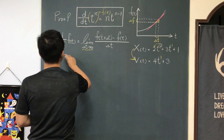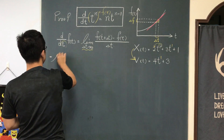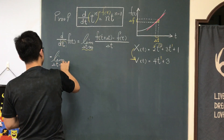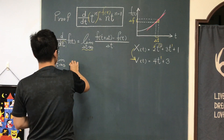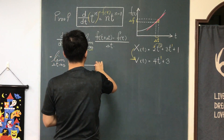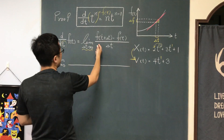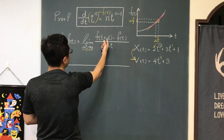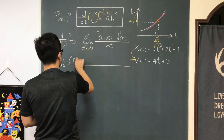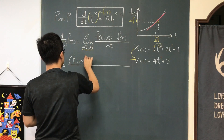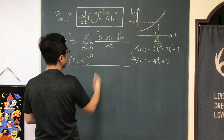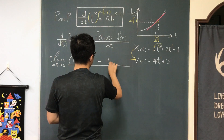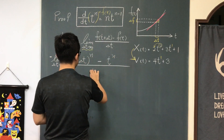Let's keep going. The limit as delta t approaches 0. Now the function is tⁿ. And f(t + Δt) will be (t + Δt) to the nth power, minus t to the n, divided by the change in time Δt.